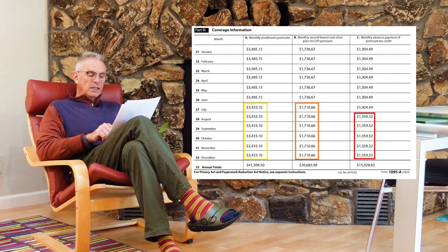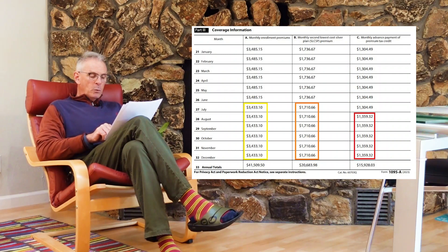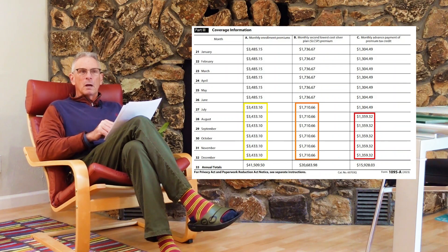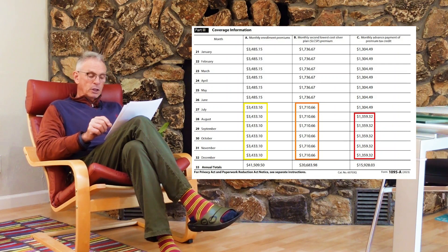Column C is the monthly advance payment of premium tax credit — the amount that Covered California actually sent to your health plan. That is important because it gets totaled for the tax documents. We can see that it changed in August. Why would it change in August? It may be that something got reported later. The way the Covered California system works, if you make a change in February, it will actually affect the March subsidies. So you need to go through and look at that.